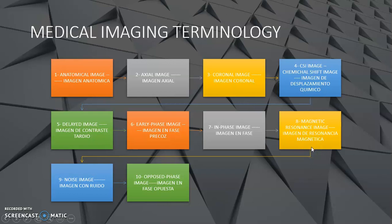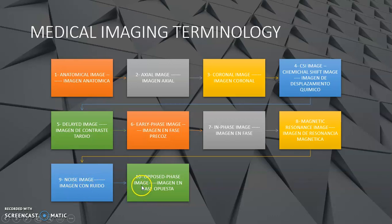Quizás para algunos de ustedes hay terminologías aquí que no son muy conocidas, pero es parte de las imágenes médicas, parte de la terminología. Hay otras que sí, como en este caso el número ocho, magnetic resonance image — imagen de resonancia magnética. Number nine: noise image — imagen con ruido. Number ten, the last one: opposed phase image — imagen en fase opuesta.